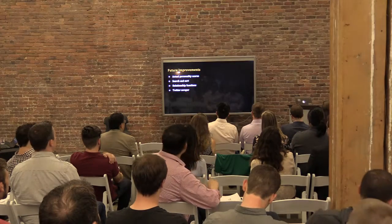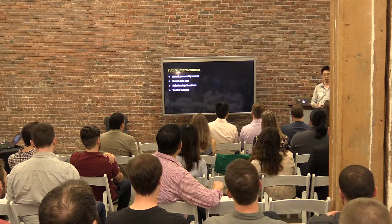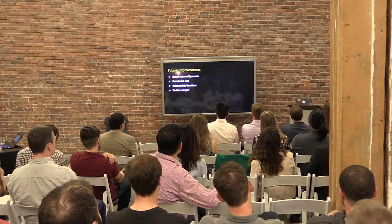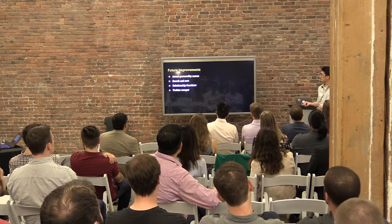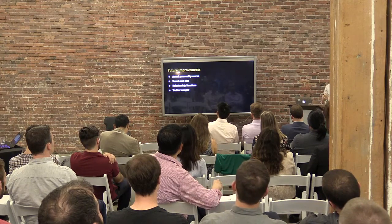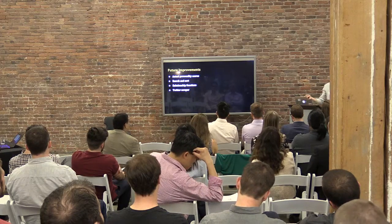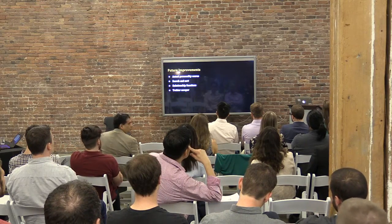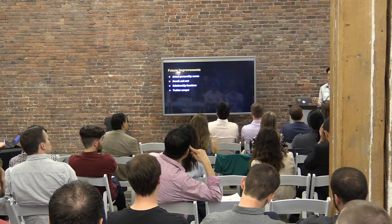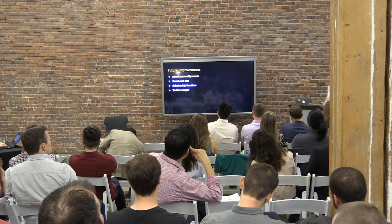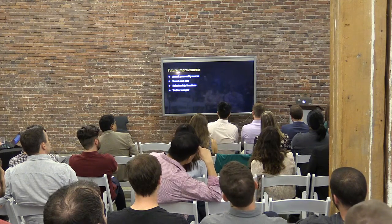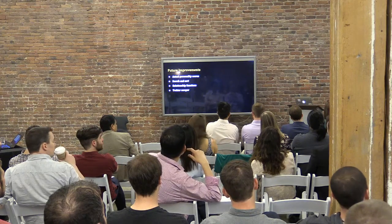For future improvements, I'd add an input function to enter actual personality scores, since these are predicted personalities and you'd want to compare real scores, not just predictions. I'd add search and sort functions — searching for a particular friend, sorting alphabetically, and so on. I'd add relationship functions like finding the most similar or most dissimilar personalities, and grouping functions to compare personalities across all your friends. Possibly also a Twitter web scraper to scrape Twitter statuses and run the model to get personality predictions for famous people.